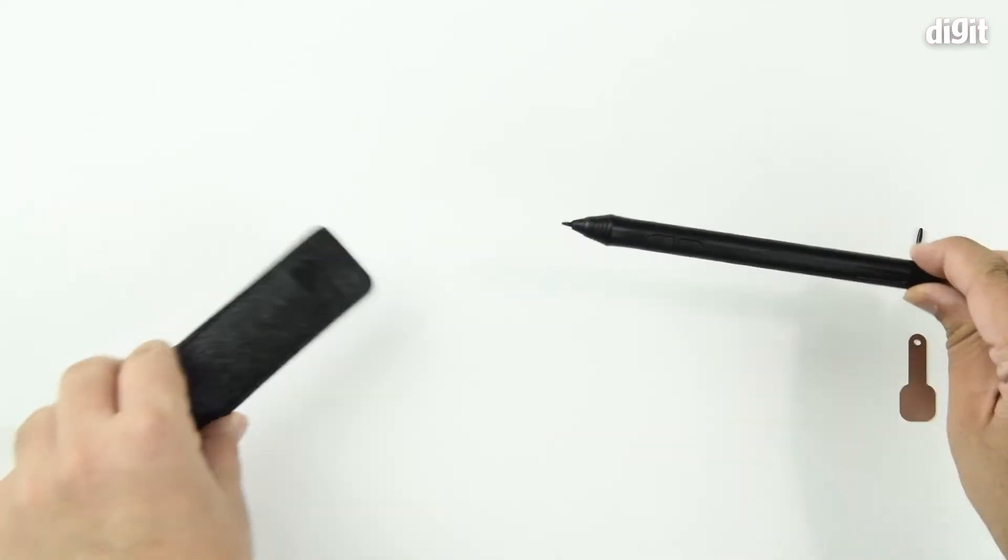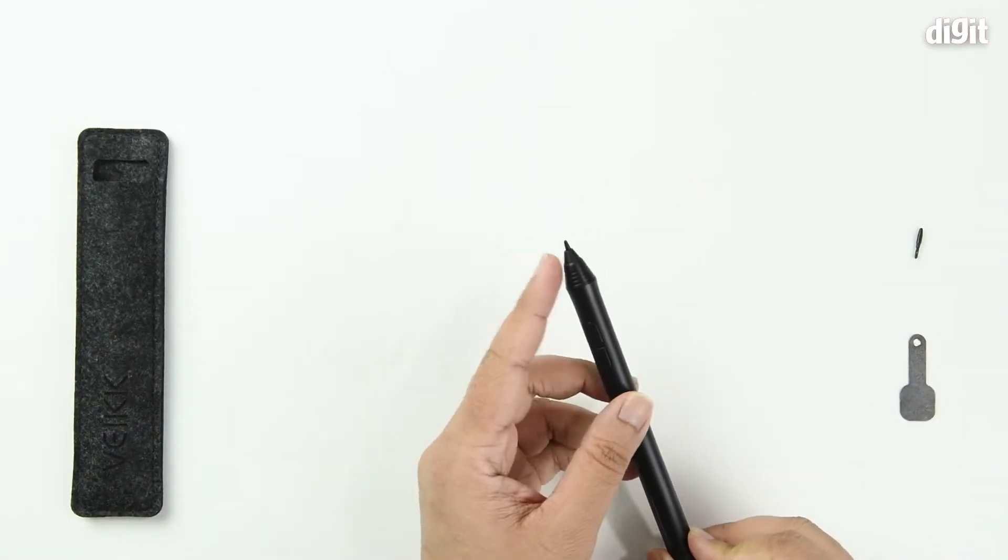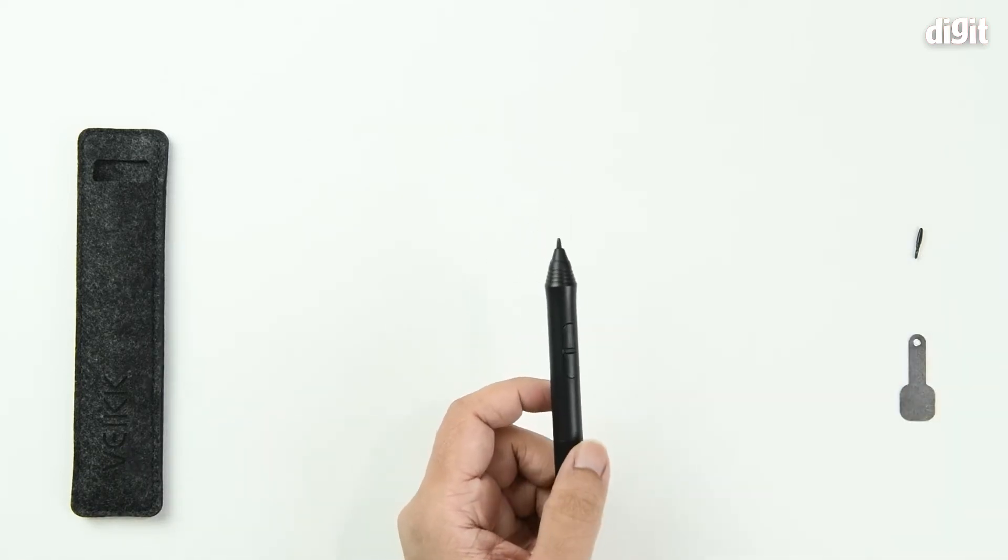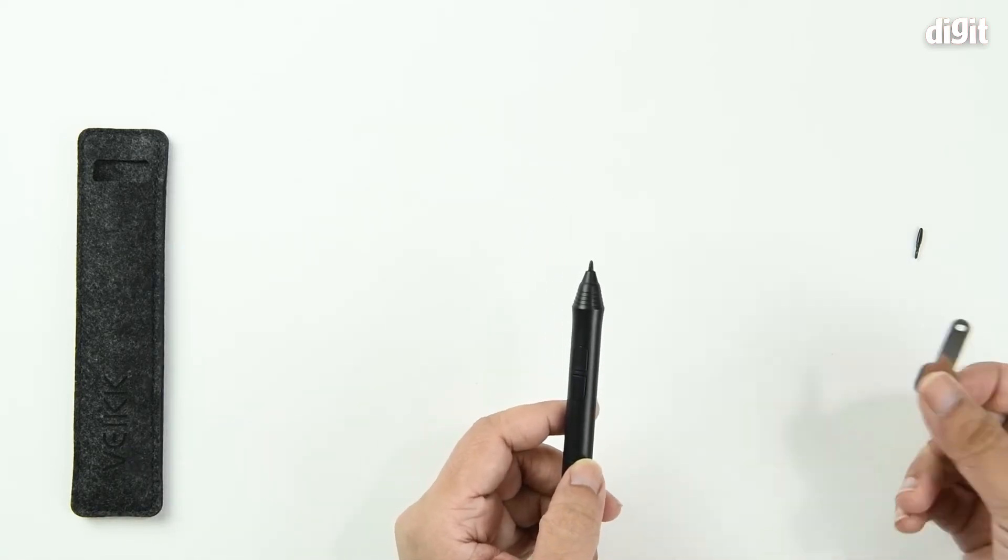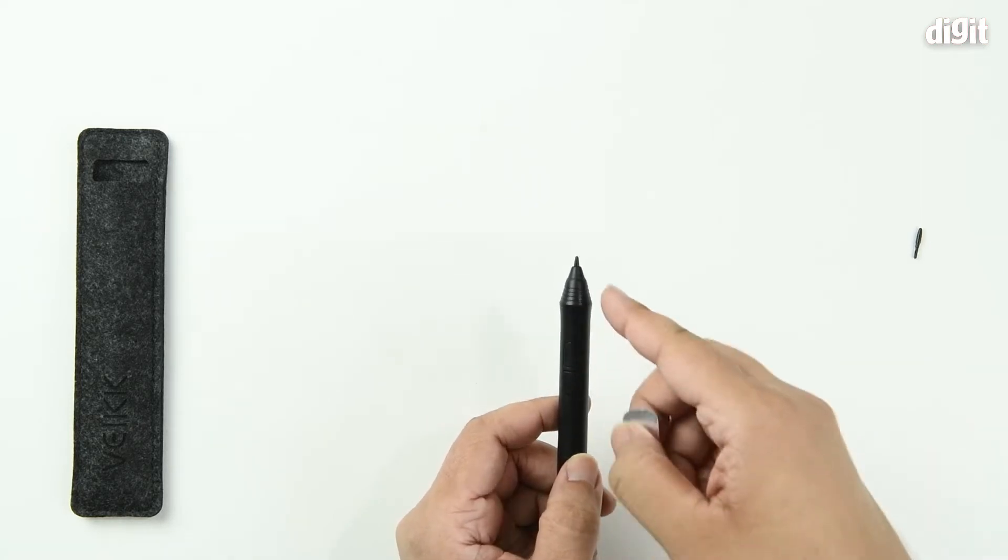Now the pen comes pre-installed with a nib and once it's run out, eroded, or damaged and you want to replace it, you get about 20 replacement nibs in the package. The nib replacement tool is what you need to use to pull the existing nib out.